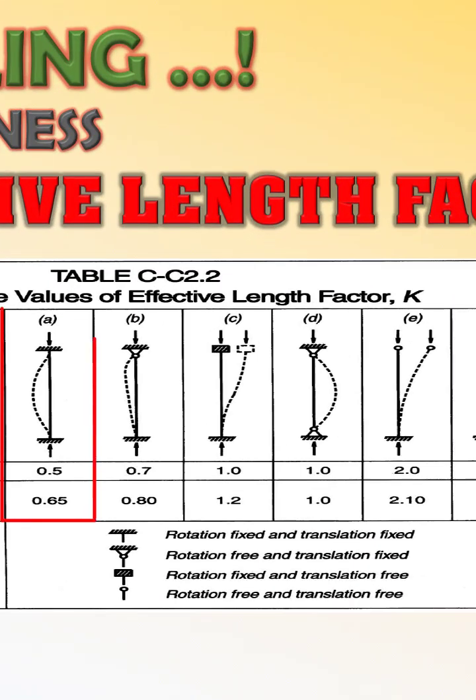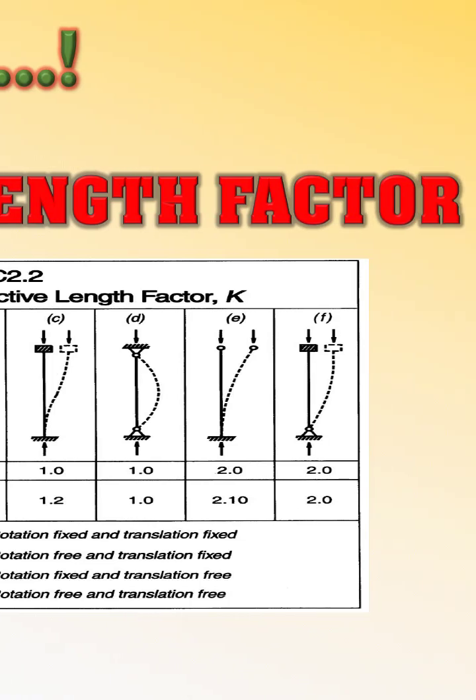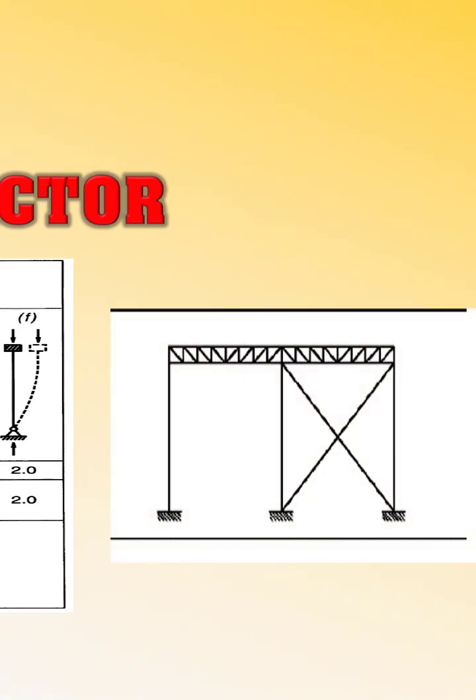In the first case, case A, where both ends have supports with fixed rotation and fixed translation, this case A can be used when this type of situation occurs. There is a frame in which there are two bays.